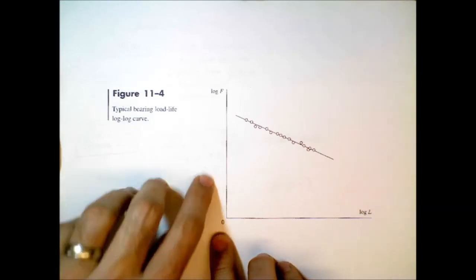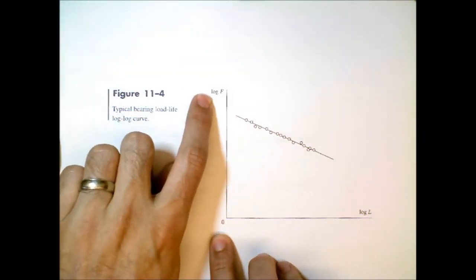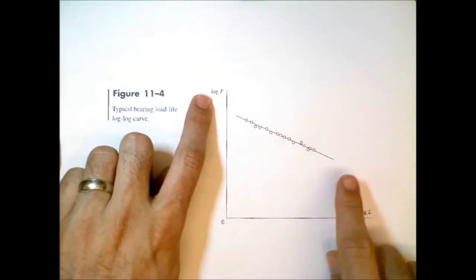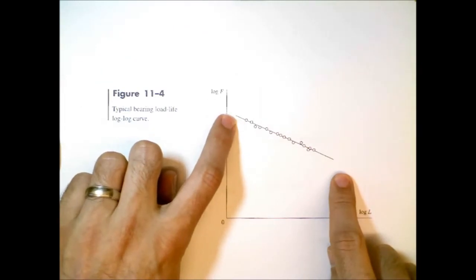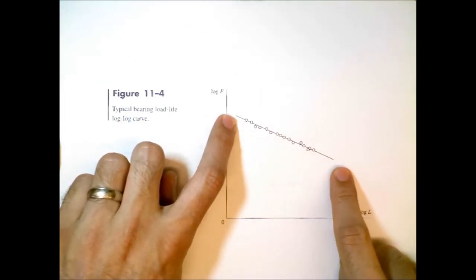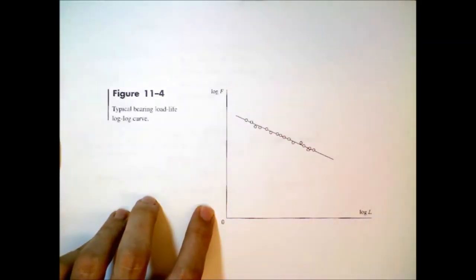On the horizontal axis, we have the log of the bearing life in rotations. And then here on the vertical axis, we have the log of force. And so if we plot this data when bearings fail on a log-log plot, we see there's this clear relationship.